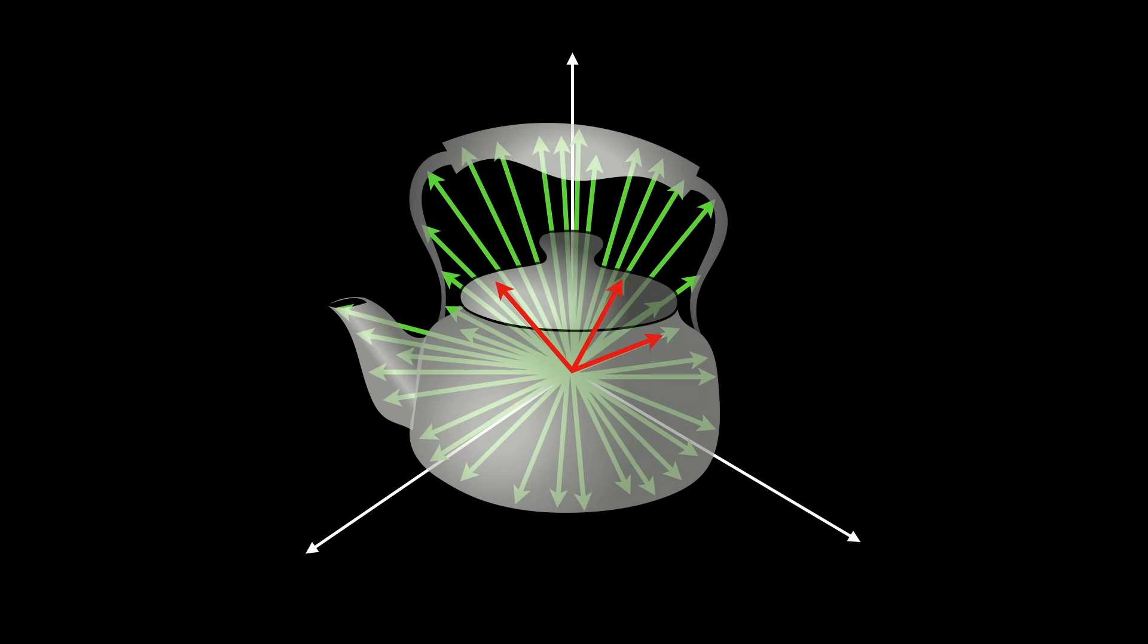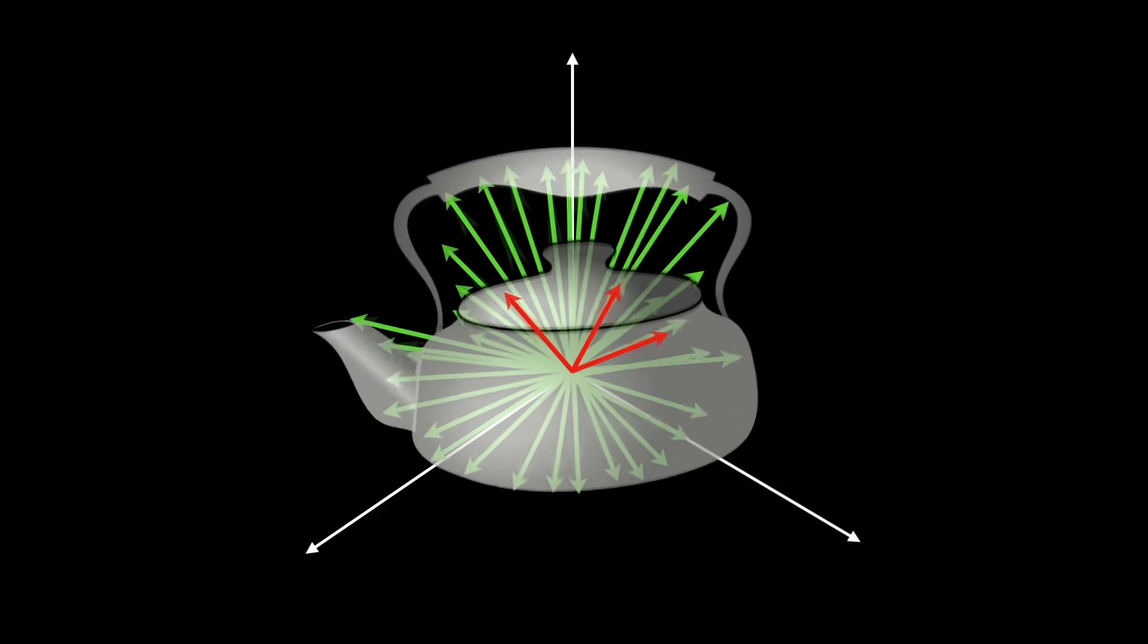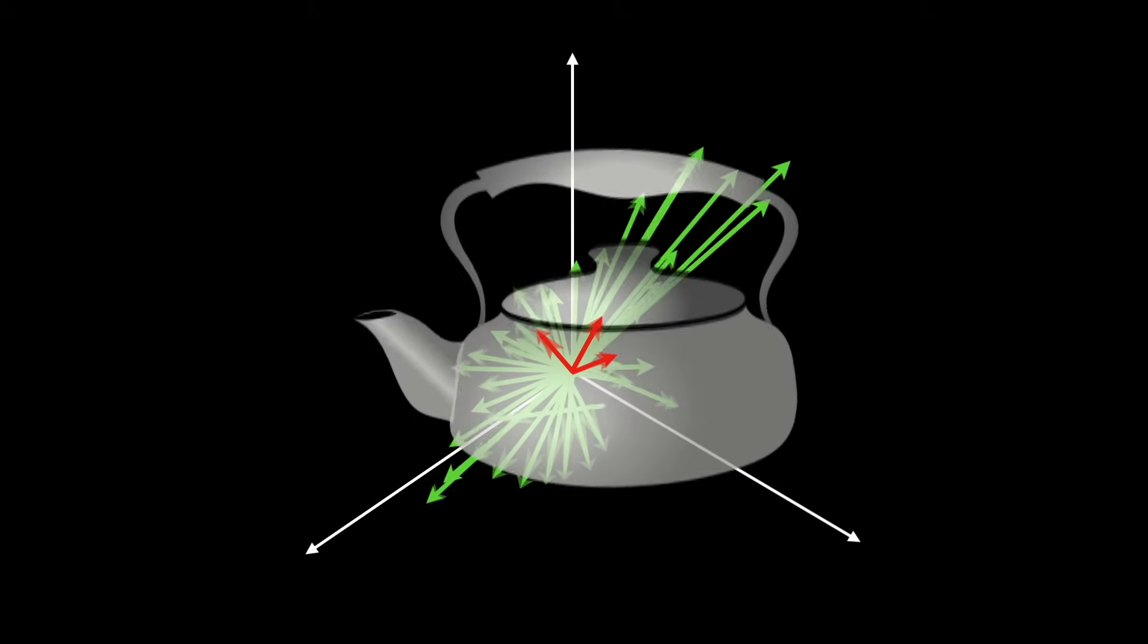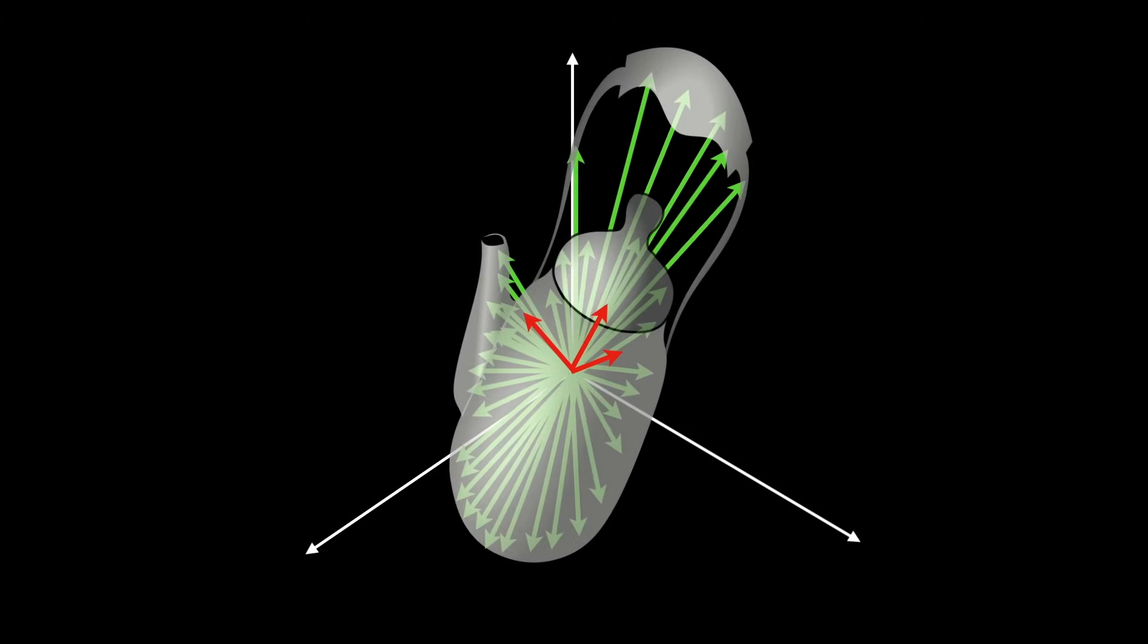But at the same time there are three special red vectors that do not rotate, and the only thing that they are allowed to do is to change their lengths, so increase or decrease it.